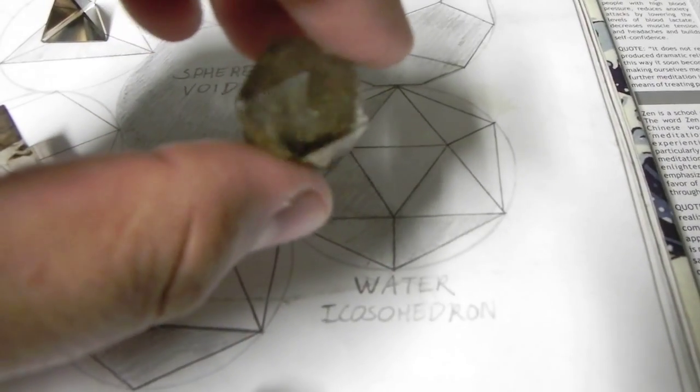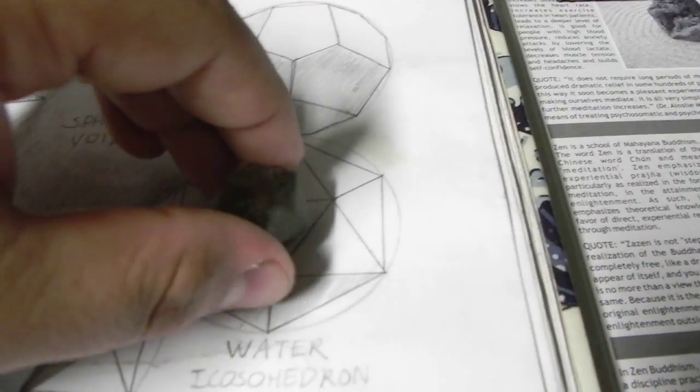The next one is the icosahedron, which is the water. But this one has 20 sides. And this one's also smoky quartz.